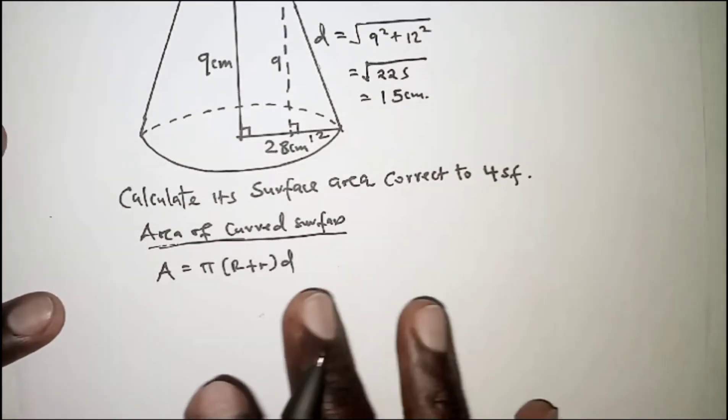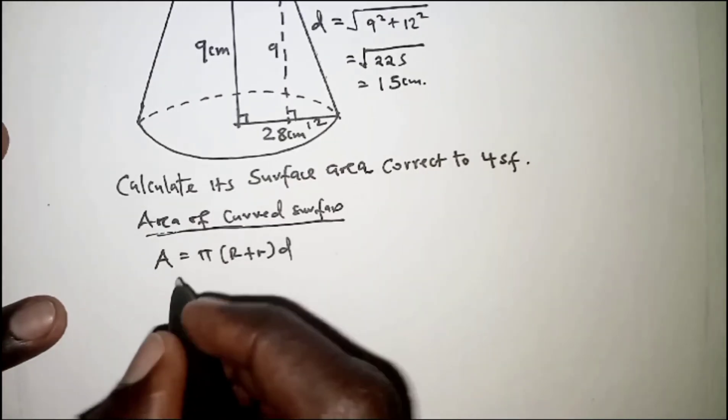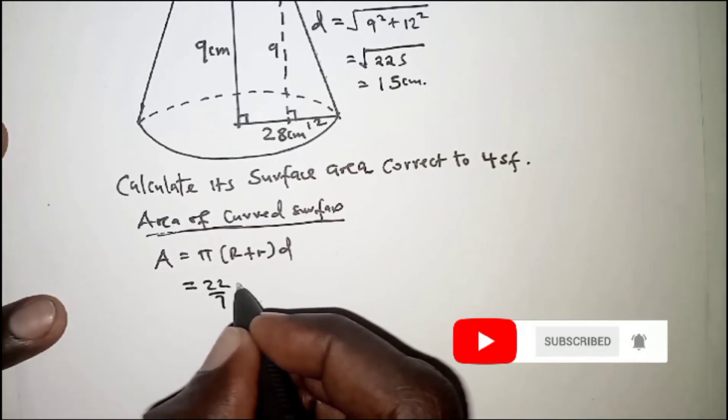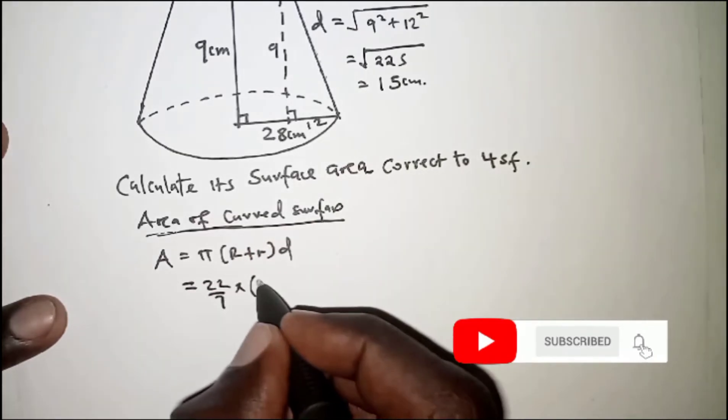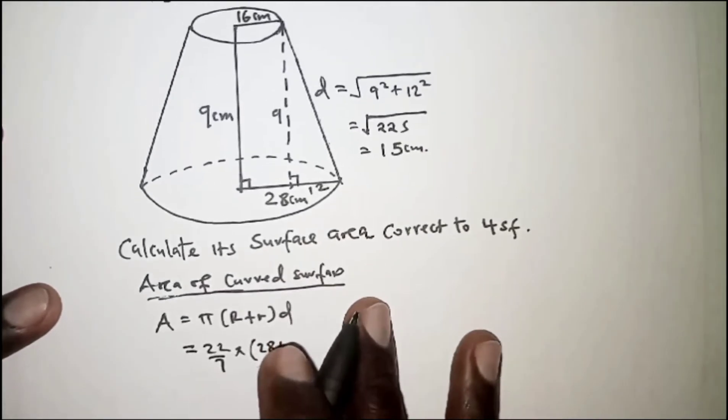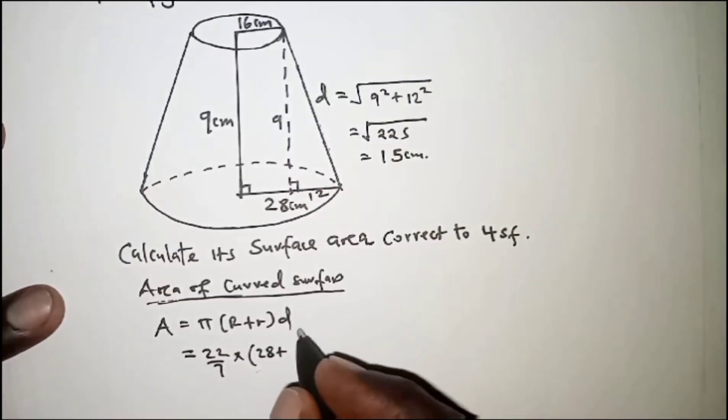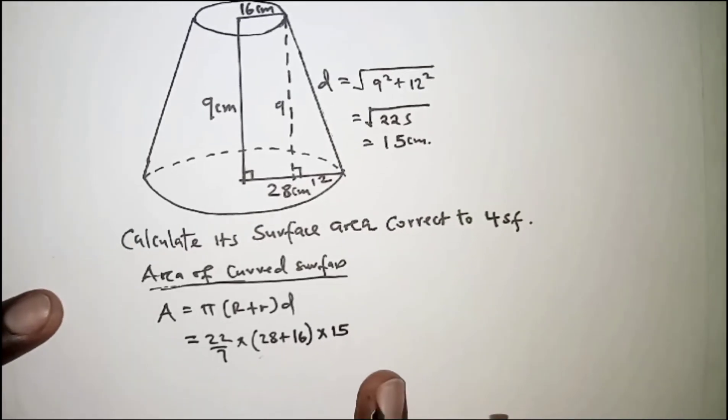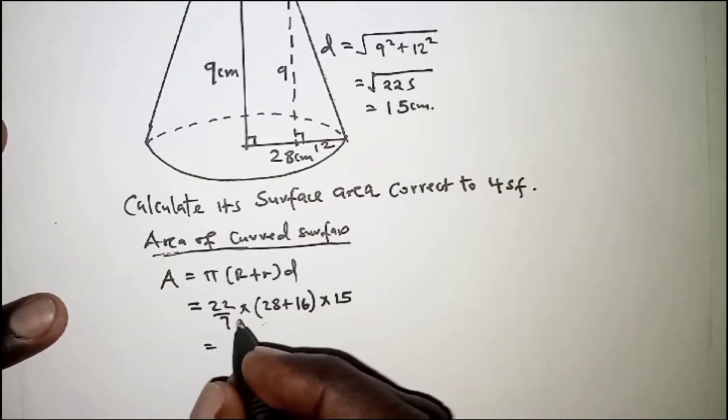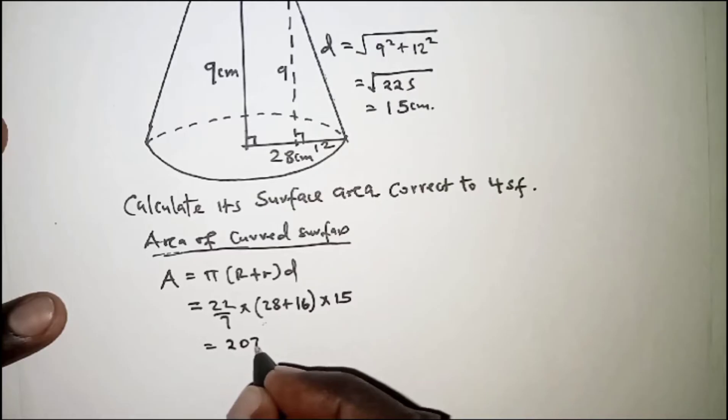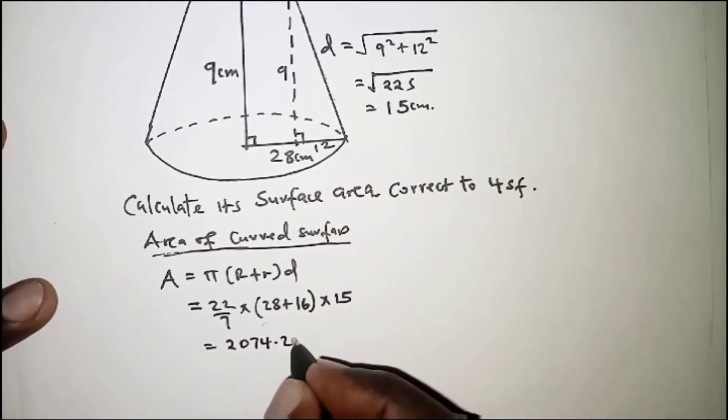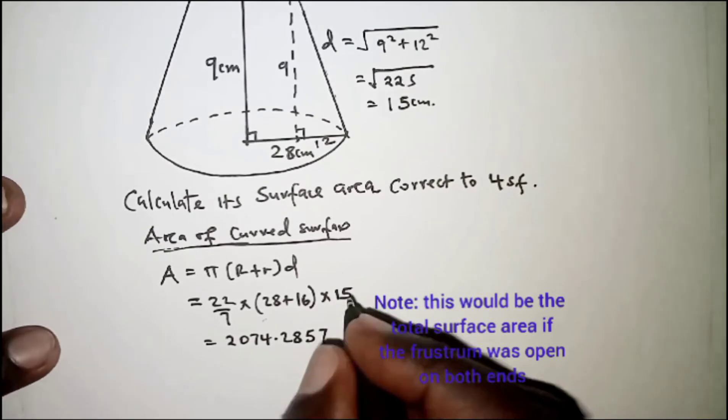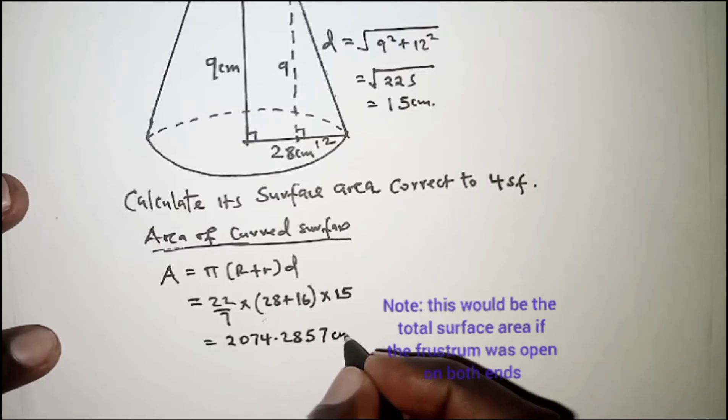With that we can now come and get the area of the curved surface. So area is equal to π, and π is 22 over 7, times the bigger radius which is 28, plus the smaller radius we have is 16, times d, and d we already have as 15. So this worked out should be 2074.2857 square centimeters.